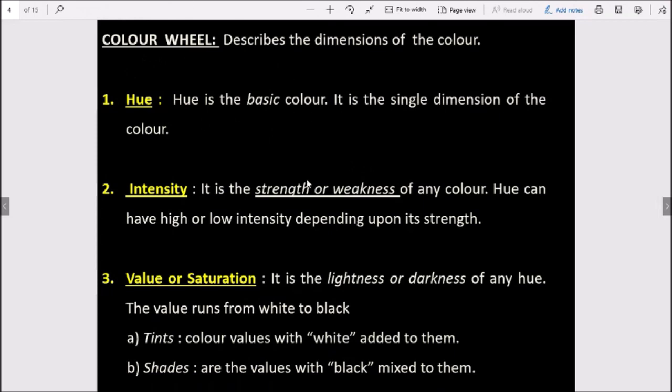If you study about the color wheel, the color wheel describes the dimensions of any color. It has four parts. First is hue. Hue is the basic color. If we talk about any single color, that is our hue. Like we can take red, blue, green, yellow, orange - any color you choose, that is a hue.